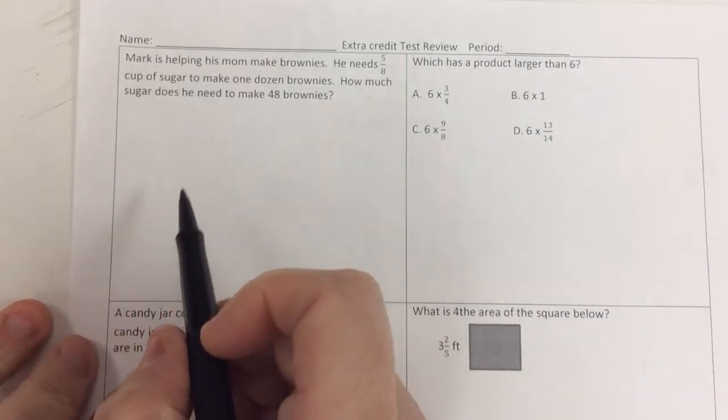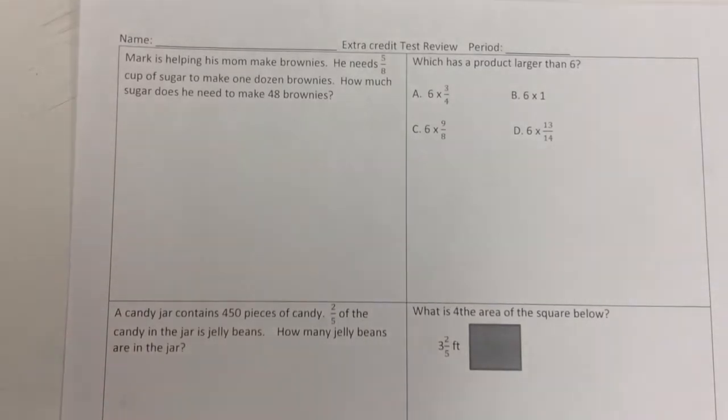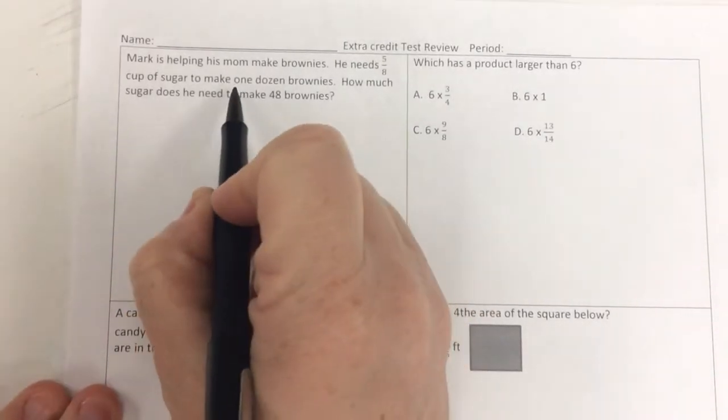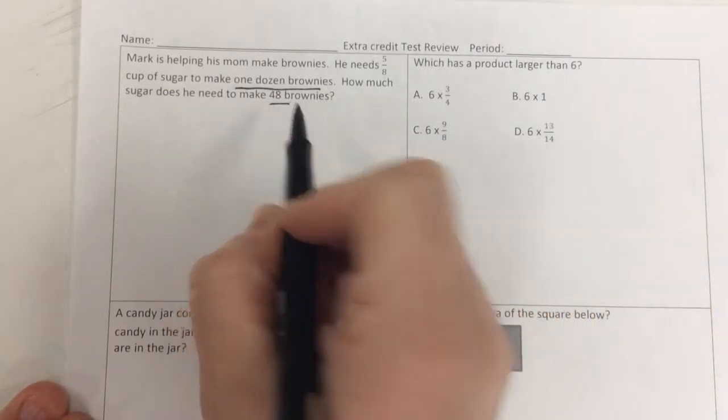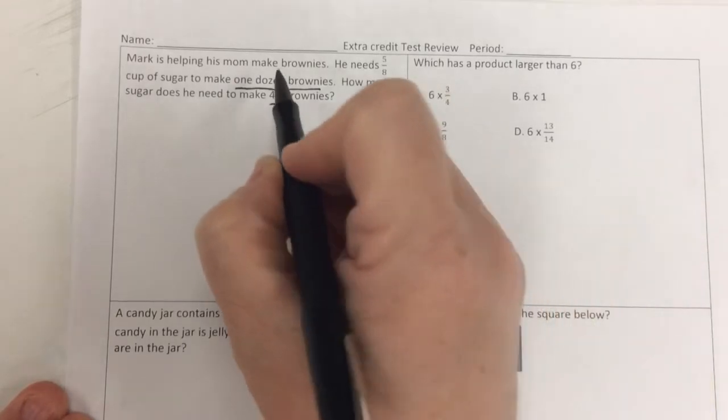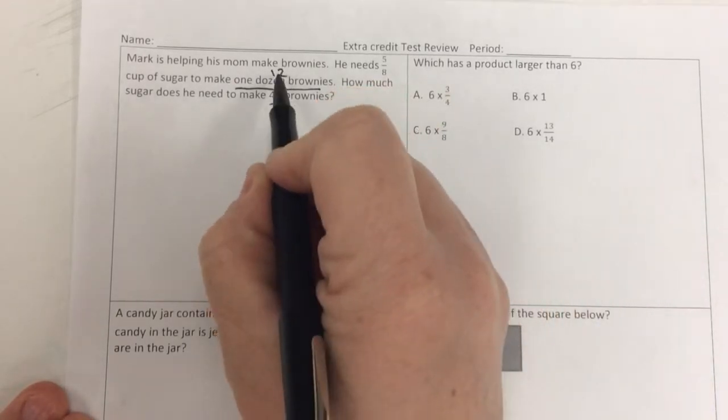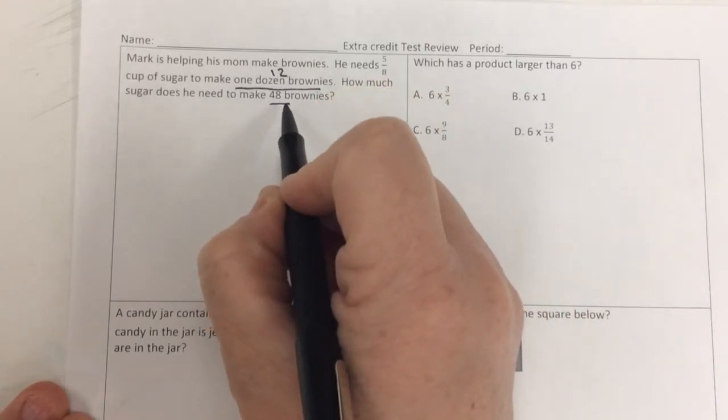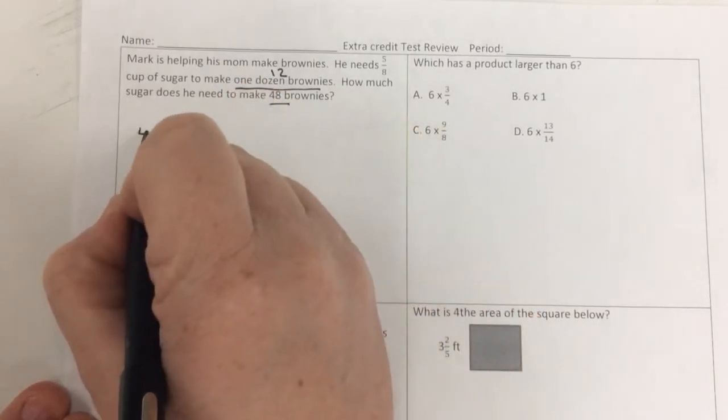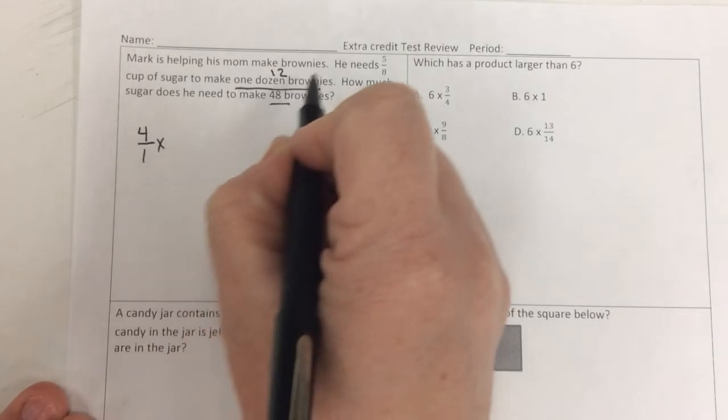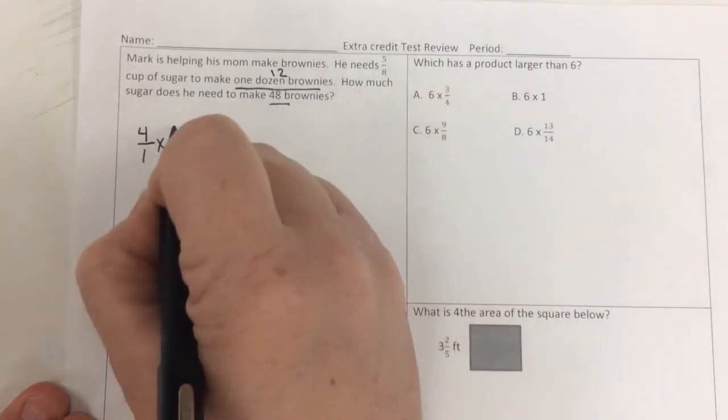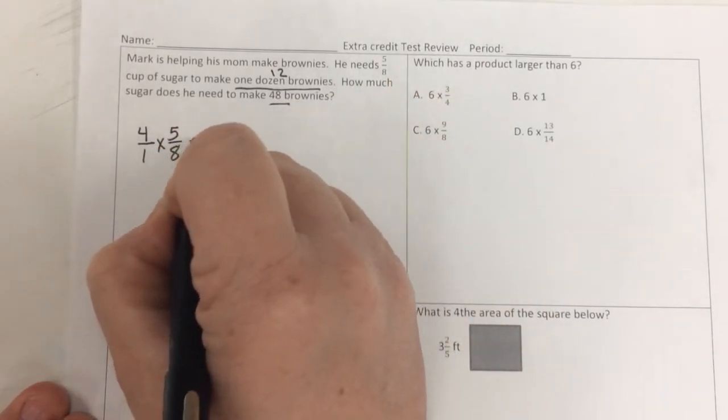So first question here, Mark is helping his mom make brownies. He needs 5/8 of a cup of sugar to make one dozen brownies. How much sugar does he need to make 48 brownies? Well remember, one dozen is 12. So if I'm going to make 48 brownies, I'm making 4 times as many. So 4 times as many brownies means I need 4 times as much sugar.